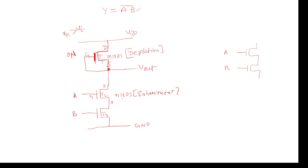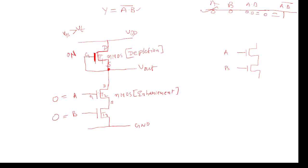Now let's check one condition in the NAND gate. When inputs are 0 and 0: 0·0 = 0, complement is 1 — we need to get output 1 from the truth table. Let's verify: I am giving A = 0 and B = 0. For an NMOS transistor, VGS between gate and source must be greater than threshold voltage for it to turn ON; otherwise it goes to OFF condition.